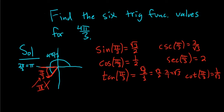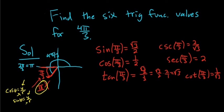Now that we have those values, we can write our answers, because we need to think about the quadrant we're in. 4π over 3 is in quadrant 3. Cosine relates to the x-coordinate — cosine of θ is x over r — and sine of θ is y over r. On the unit circle where r equals 1, cosine equals x and sine equals y. In quadrant 3, both x and y are negative, so both cosine and sine are negative.